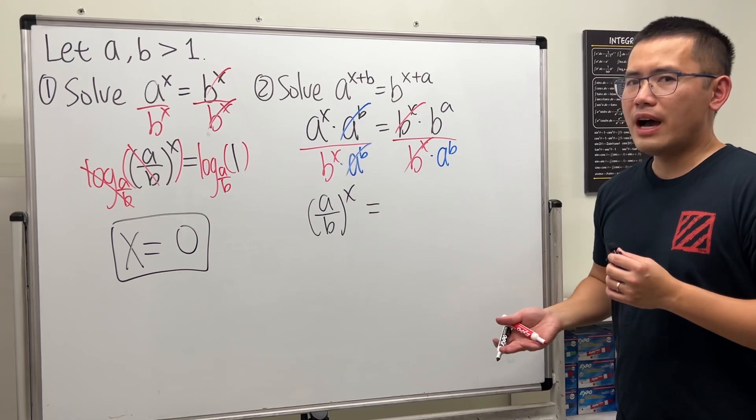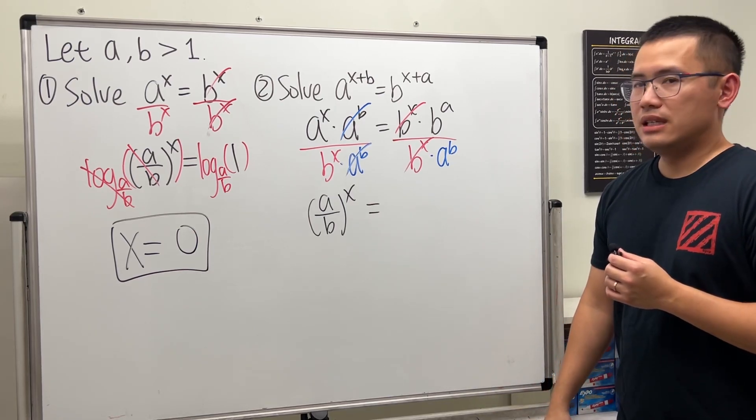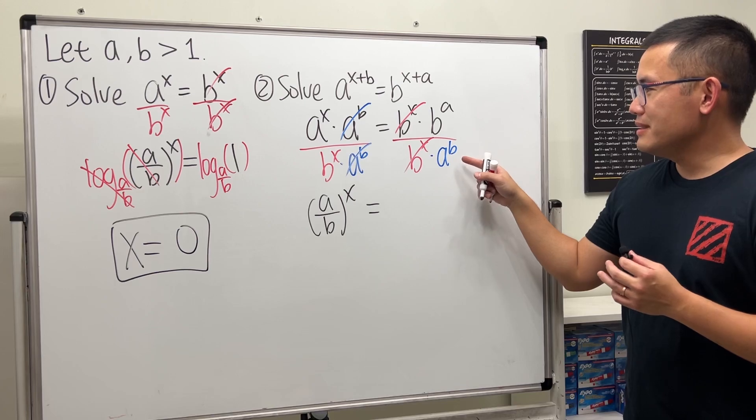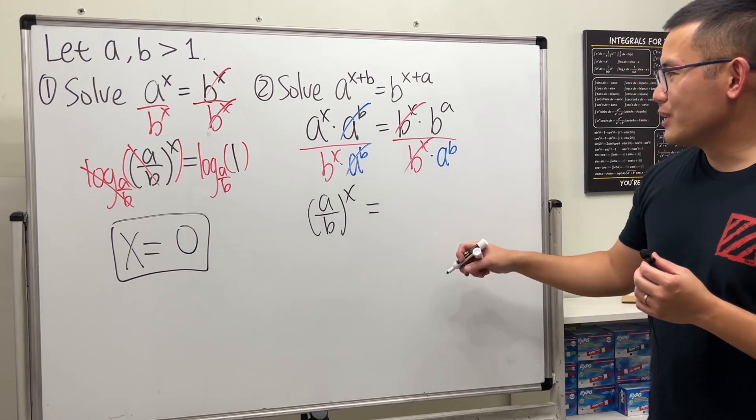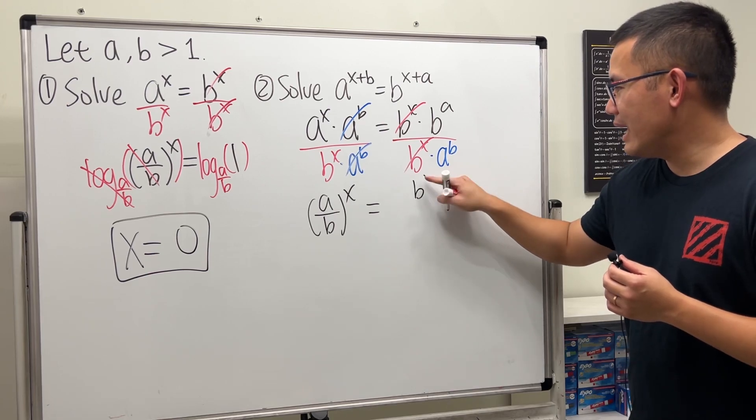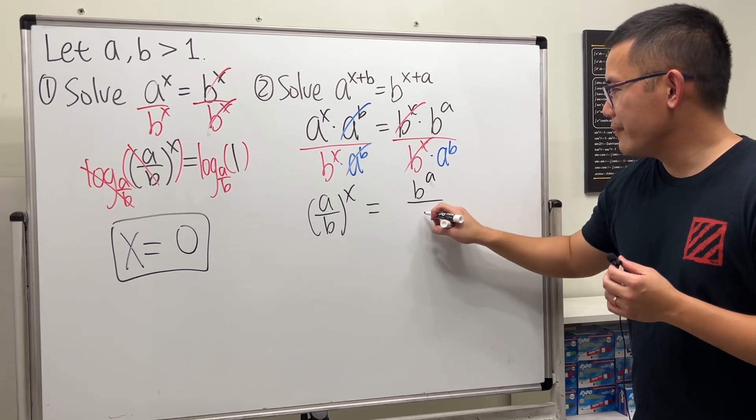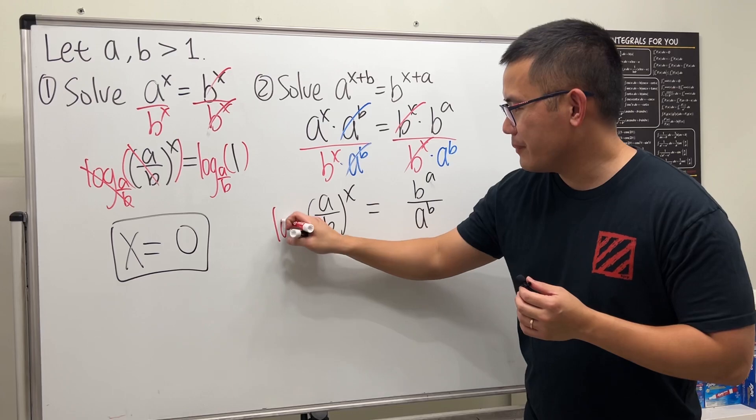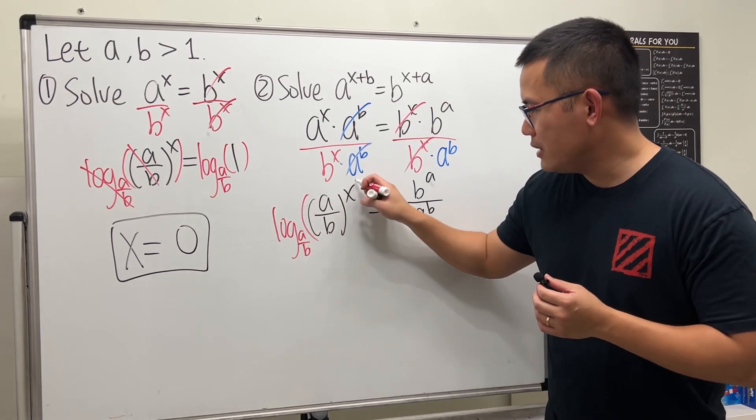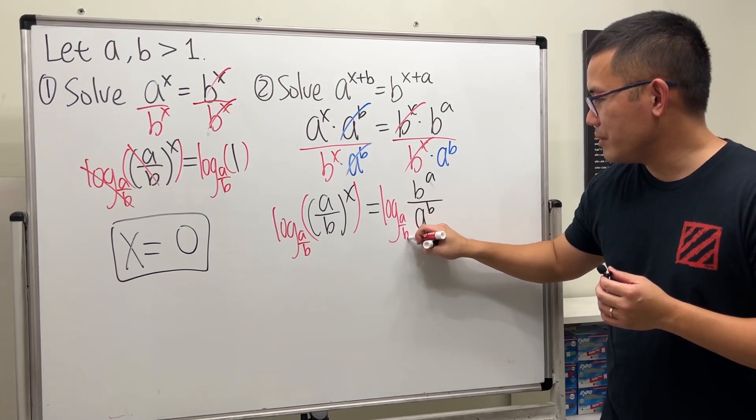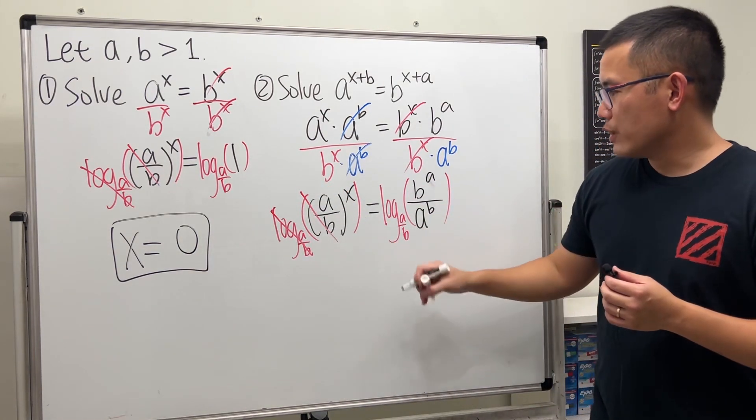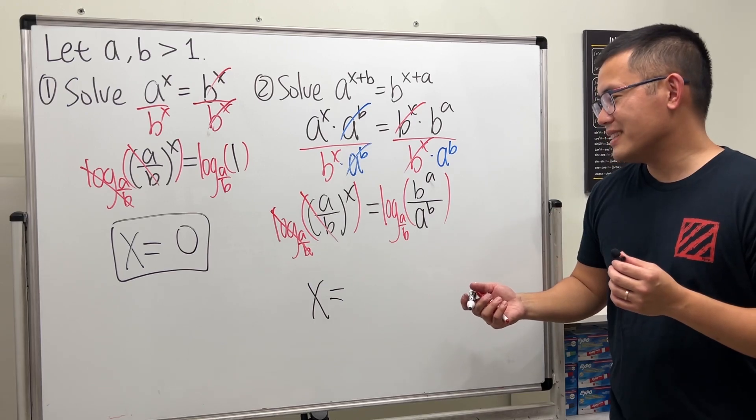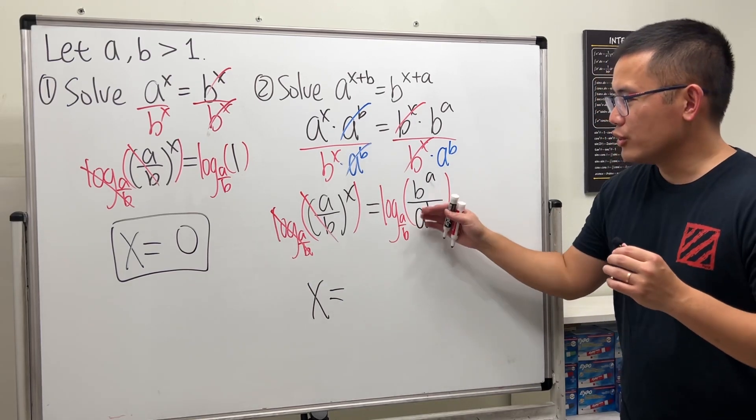For the right hand side, we have b^a over a^b. Can we simplify in any way? No, unfortunately, because the bases are different and the exponents are different. I'm just going to keep it as it is. Now I will still do the same like what we did earlier - take log base a/b. This cancels so we just get x equals that thing.